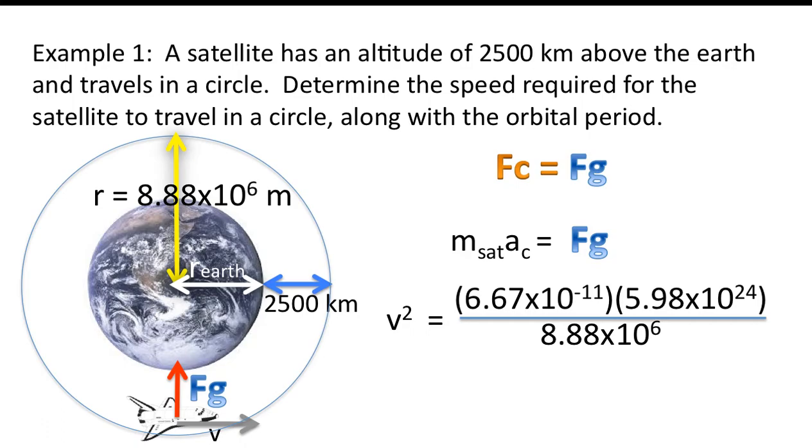Substituting our values, we have our g, which is 6.67 times 10 to the negative 11. Mass of the earth, 5.98 times 10 to the 24. And our distance, 8.88 times 10 to the 6. And we end up with the following speed. If you recall from the simulation, that was the exact same speed that the simulation gave us.